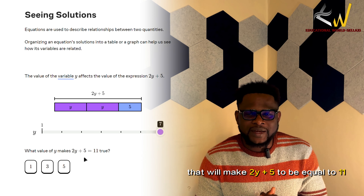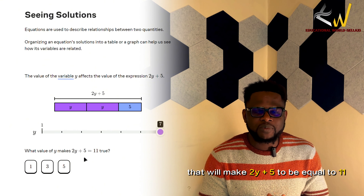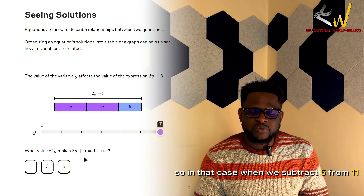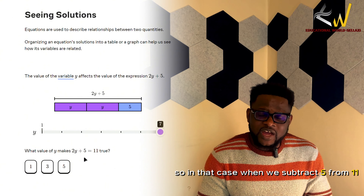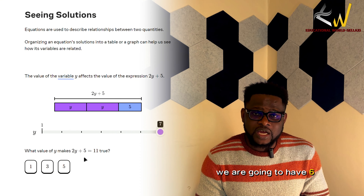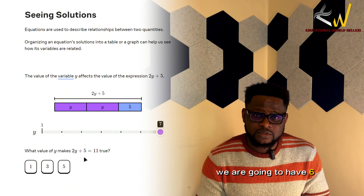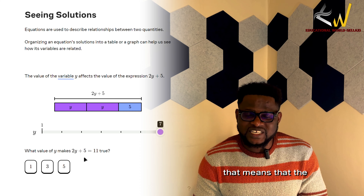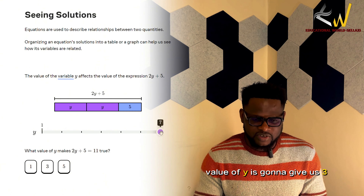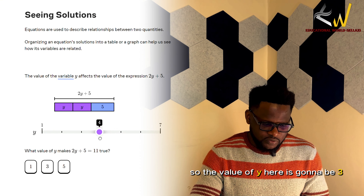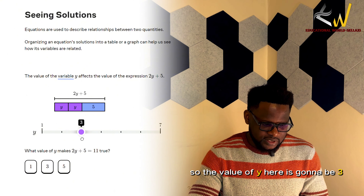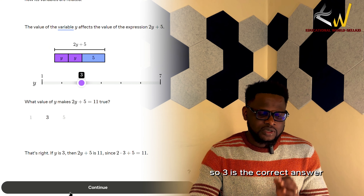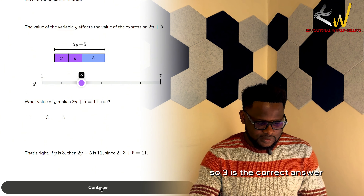What is the value of y that will make 2y plus 5 equal to 11? When we subtract 5 from 11, we get 6. So if 2y is equal to 6, that means the value of y is going to give us 3. So the value of y here is 3 — that is the correct answer.